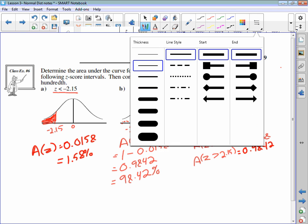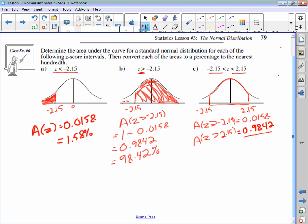Then for the area between the two of them, we just take these two numbers and we are going to subtract them. So the area of negative 2.15 less than z less than 2.15 is equal to 0.9842 minus 0.0158, which is going to be 0.9684. That is the area.